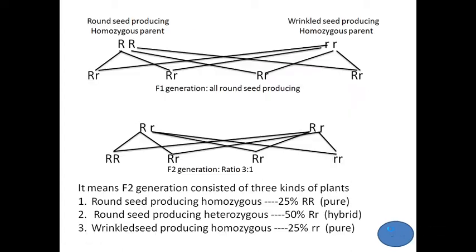For example, in a standard Mendelian cross, we have the dominant parent capital R, capital R, and the recessive parent, small r, small r — a homozygous recessive parent. The F1 generation offspring are capital R, small r. Since there is a capital R present, this plant is a round-seed-producing plant, resembling the dominant parent.